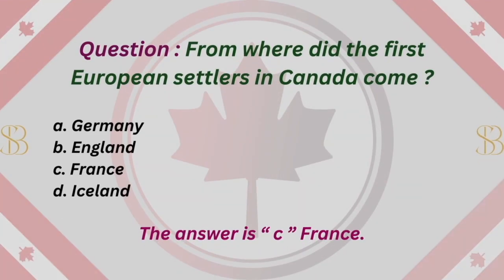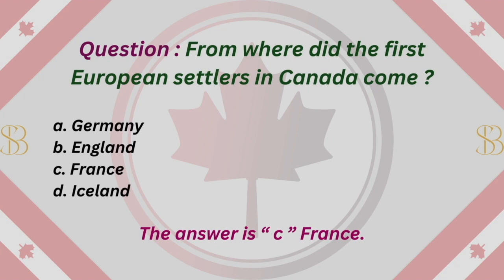Question: From where did the first European settlers in Canada come? A. Germany. B. England. C. France. D. Iceland. The answer is C. France.